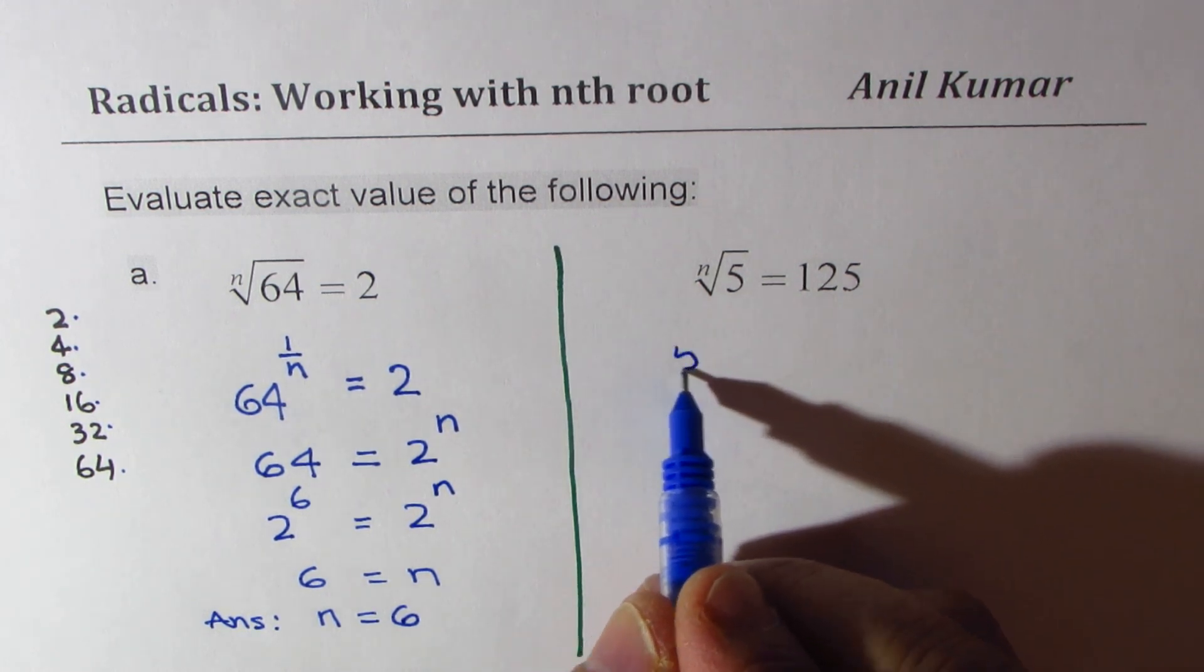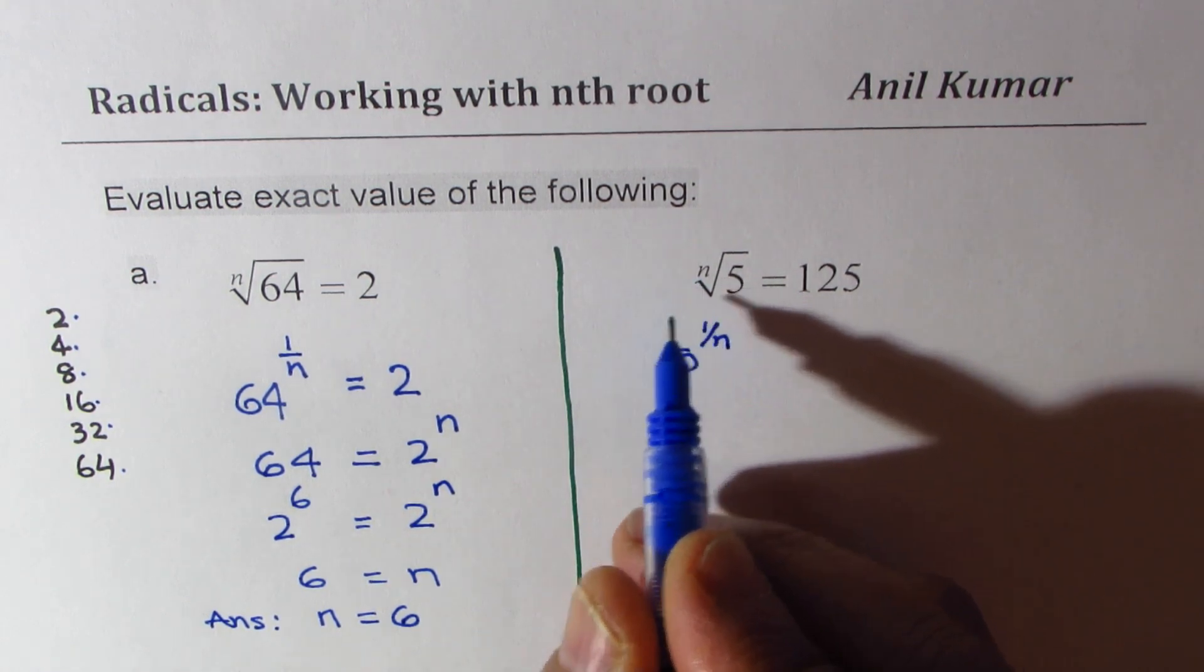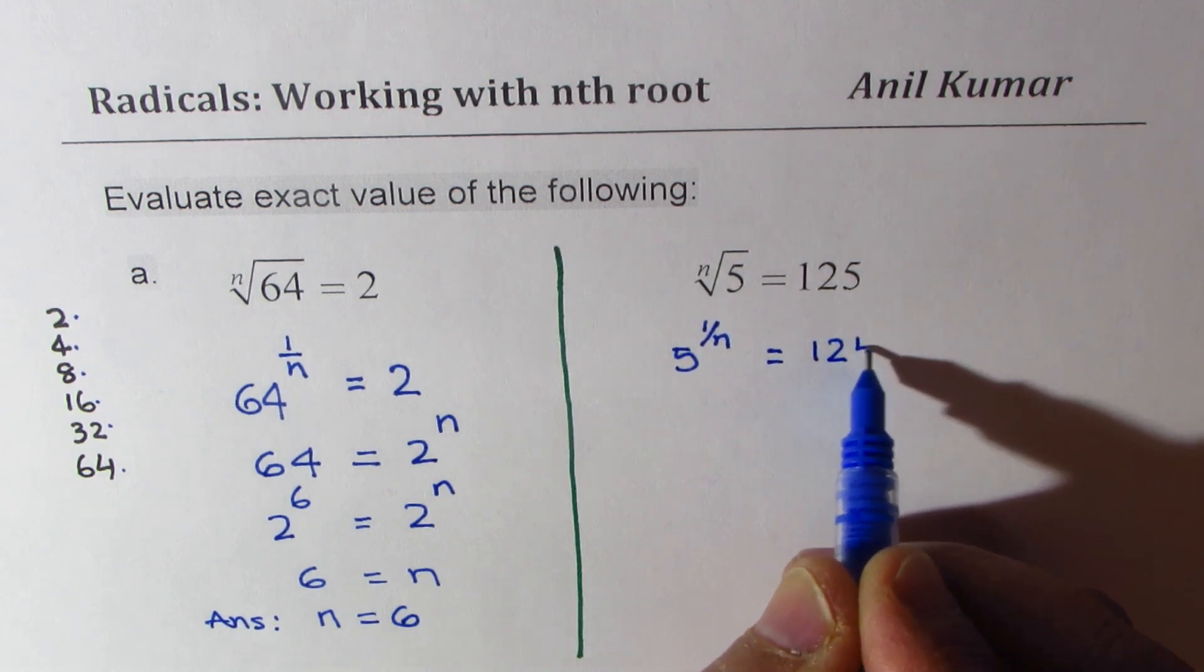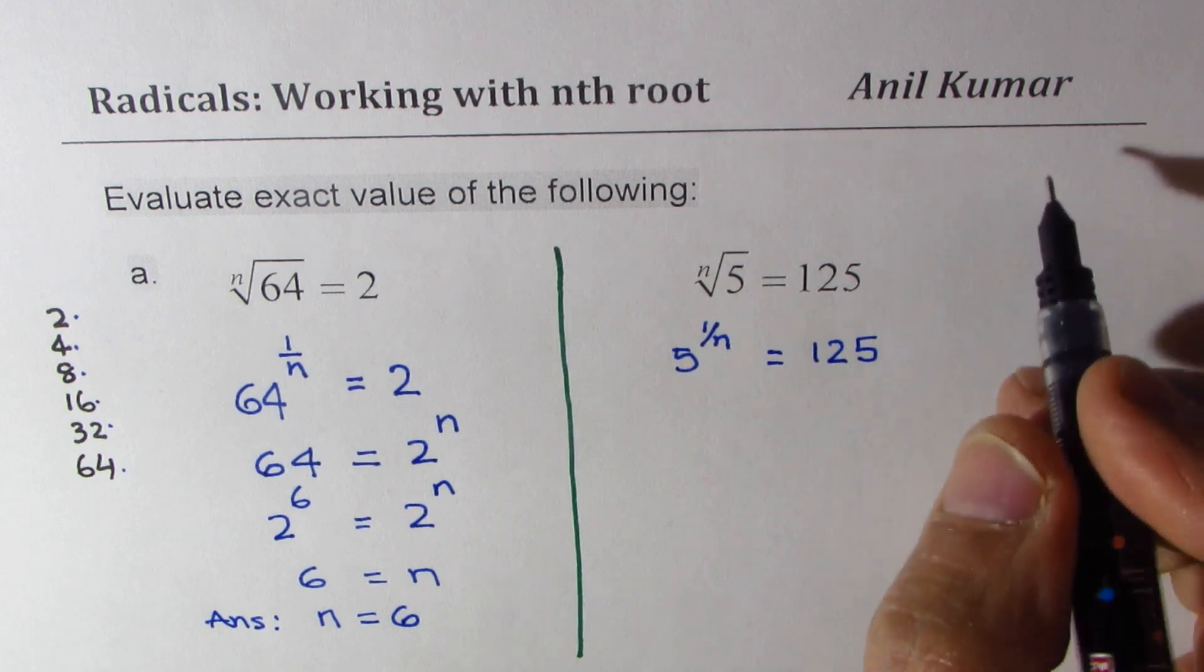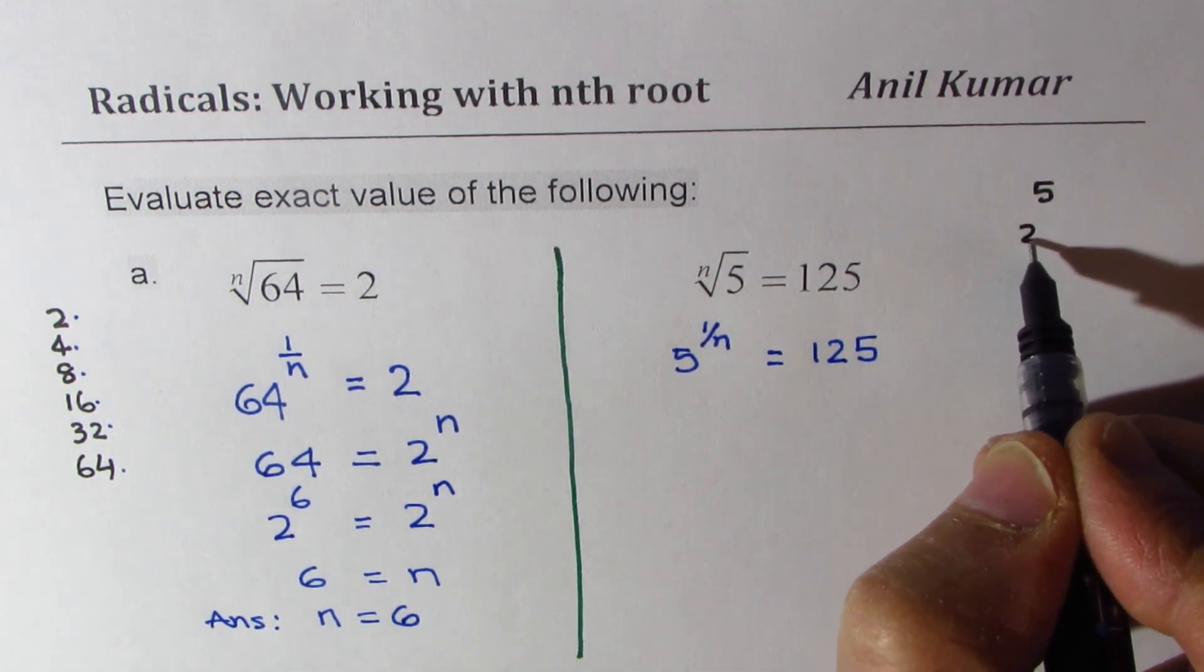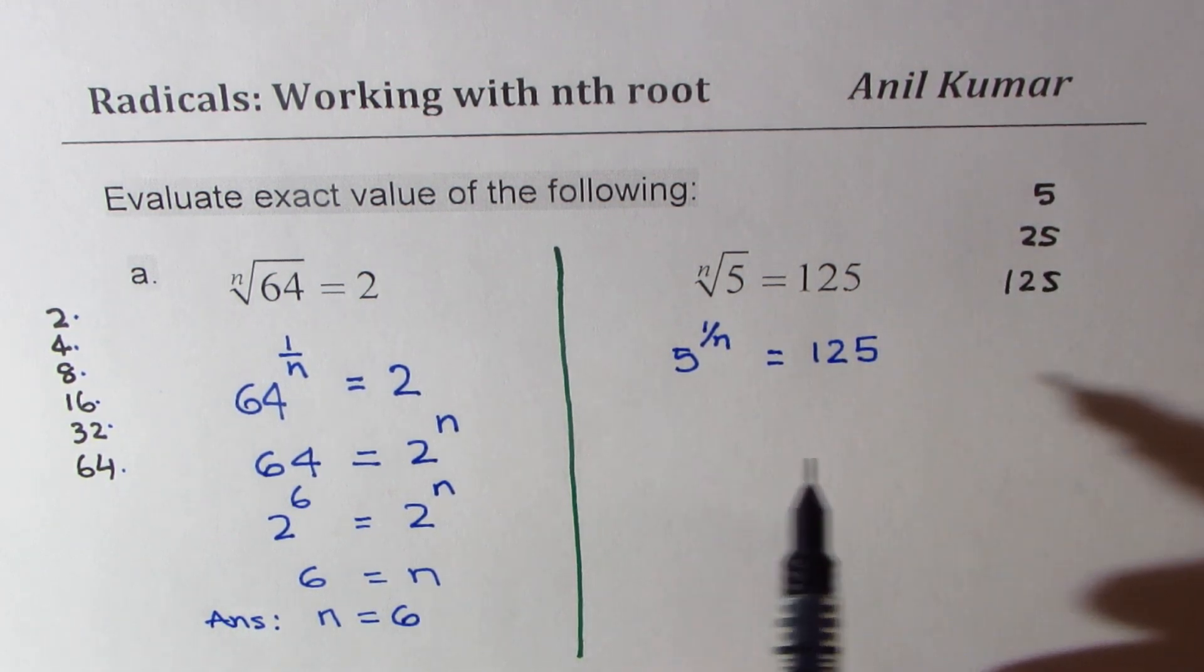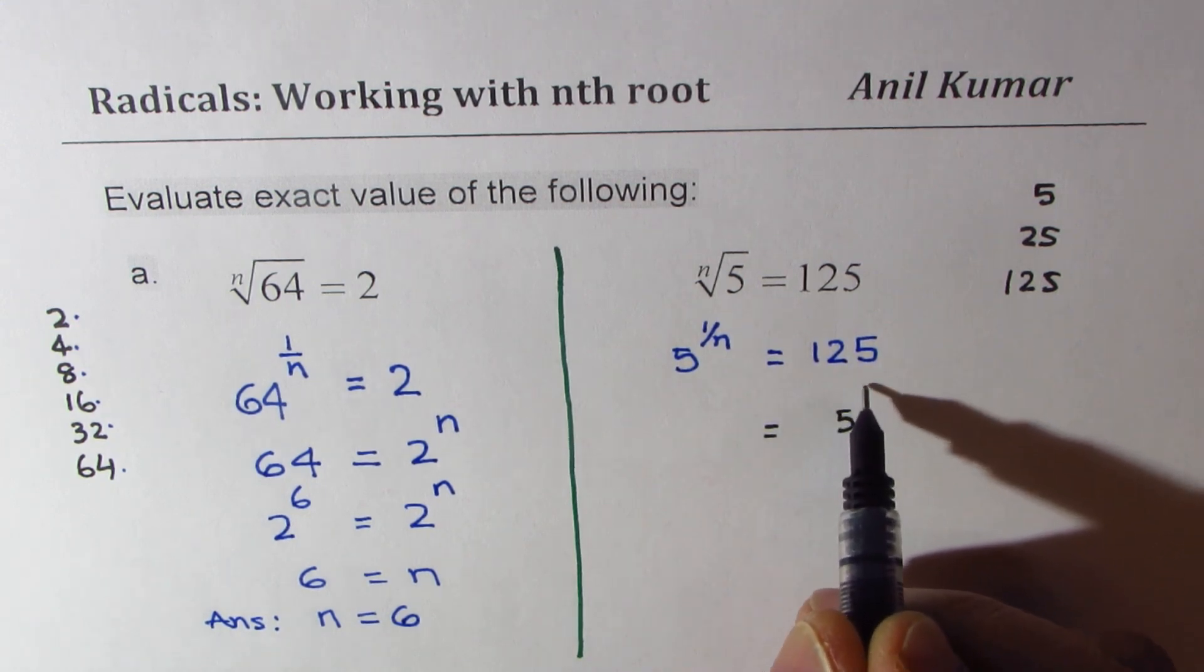So again, we are given 5 to the power of 1 over n. That is what this index n here means, equals 125. Now let's look into 5 powers. So it's better to find powers, 5 times itself is 25, and times 5 is 125. So basically, we get 125 as 5 to the power of 3.